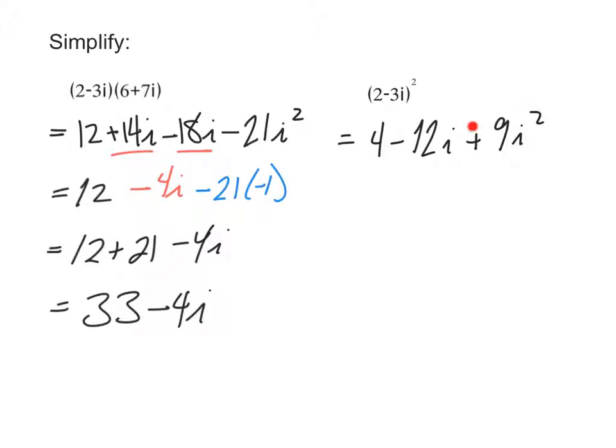Combining like terms again, we see this I squared. So that's going to make, instead of plus 9I squared, that's the same as negative 9. All of this will turn into minus 9. So when we simplify, 4 minus 9 is negative 5, minus 12I.